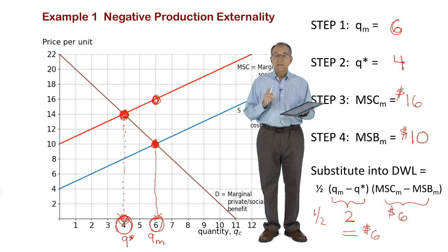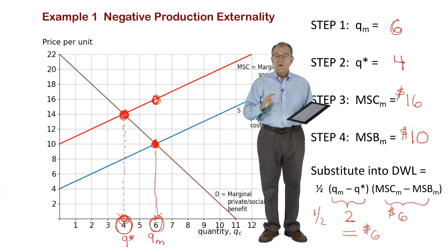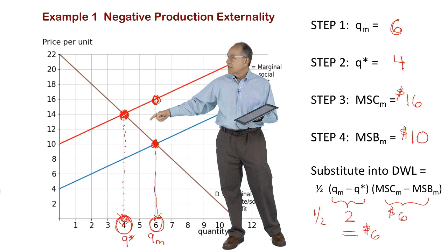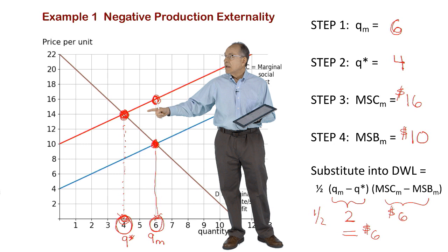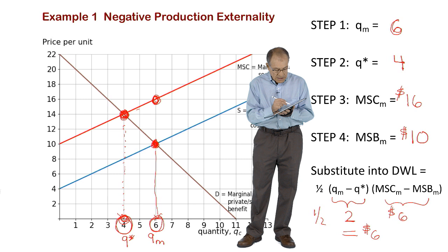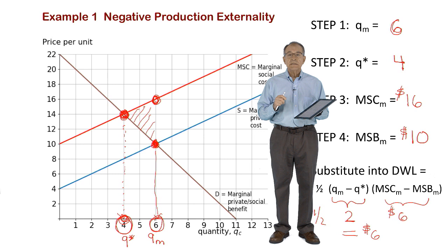The deadweight loss as a consequence of this negative production externality is $6. Notice that by following these four steps and placing dots on the diagram, you've identified the three corners of the deadweight loss triangle. The $6 calculated using the formula equals the area of that shaded triangle. Follow these easy steps to calculate the social loss and identify the deadweight loss triangle.